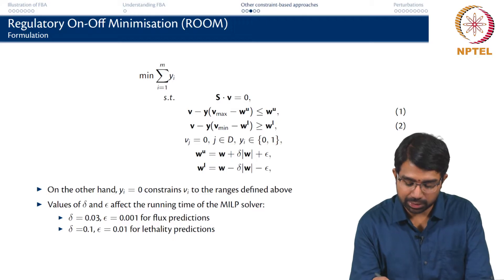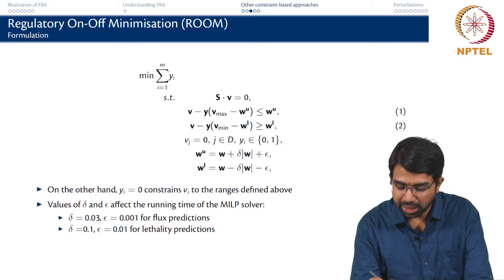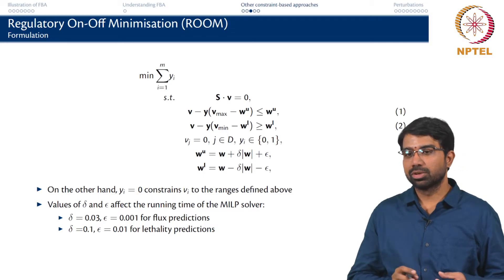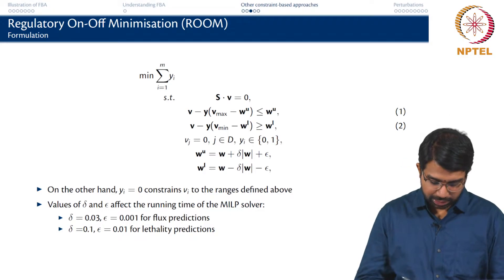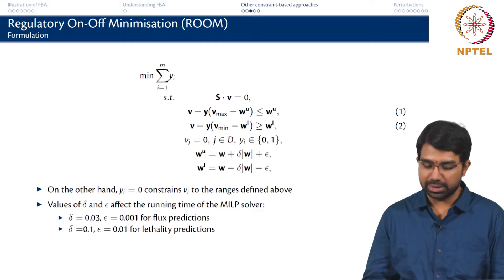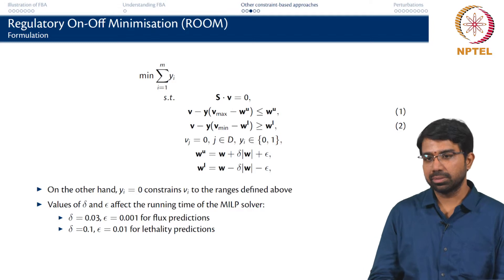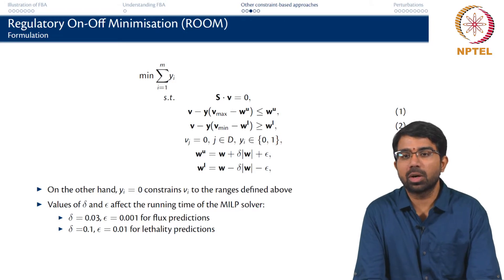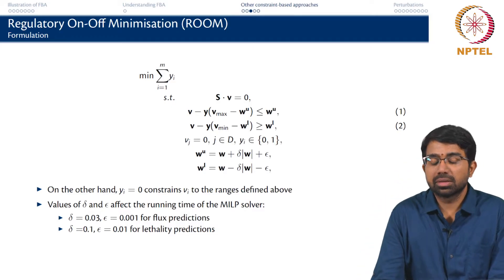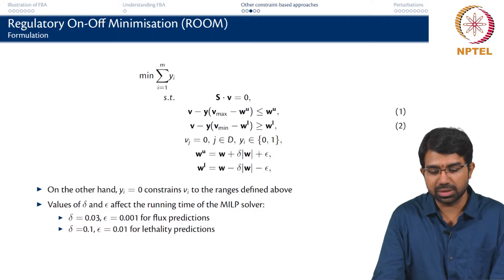Delta is some percentage change and epsilon is something above that — essentially two parameters you can tune to assess your predictions. Delta equals 0.1 and epsilon equals 0.1 was good for lethality predictions, whereas for predicting growth rates, different delta values were more reasonable. The main idea is that you can come up with different formulations based on what makes more sense with respect to the biology you are interested in — whether it is more important to minimize the overall flux changes or the number of flux changes.